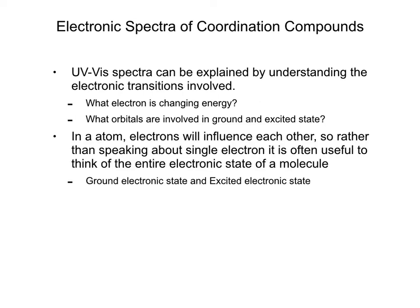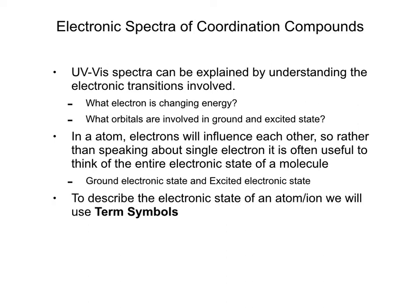In an atom, electrons influence each other, so it's often more useful to think about the electronic state of a molecule rather than a single electron's move — what is the ground electronic state and what is the excited electronic state. The way we summarize an electronic state is through the use of what we call a term symbol.